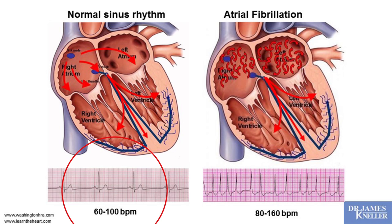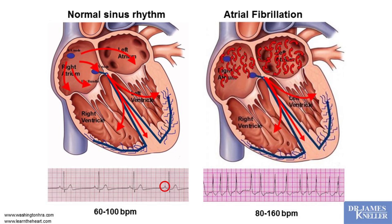On a rhythm strip or ECG, we see the signal for the top chamber contracting, then the bottom chamber contracting, then the bottom chamber recovers. We have a pause, then top, bottom, recover — and that is a normal heart rhythm.